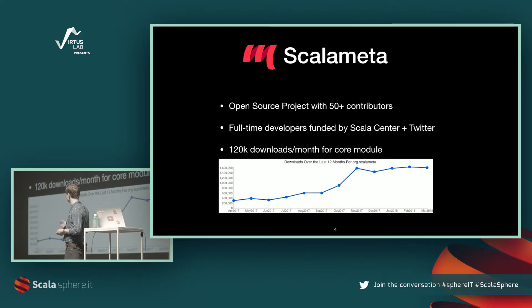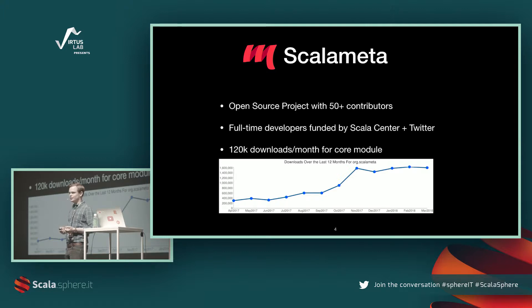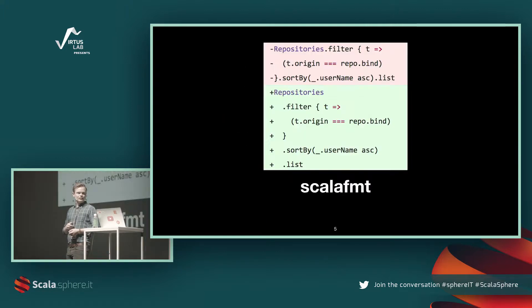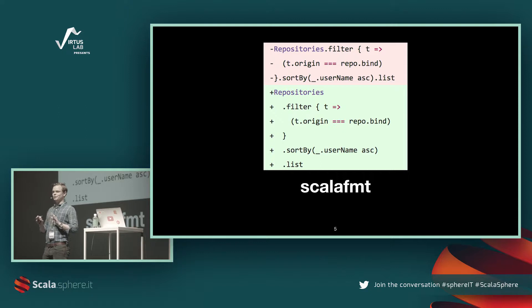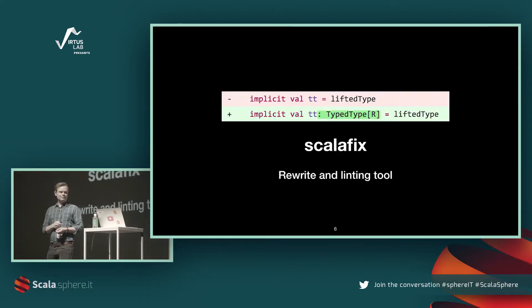As of this month, we're getting around 120,000 downloads on the core module, which has been growing quite a lot over the last year. I got into tooling because I wanted to do a code formatter. I'd been working with Python where I had a formatter, then I went into Scala and felt handicapped, so that's how I got started.